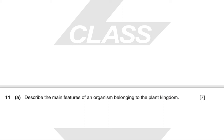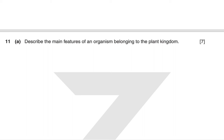Final question: describe the main features of an organism belonging to the plant kingdom. Features include: a cell wall made of cellulose, a large central vacuole, plasmodesmata, multicellular organisation, autotrophic nutrition, chloroplasts and chlorophyll enabling photosynthesis, eukaryotic cells, starch as the primary storage compound, and cells differentiated into tissues. Adaptations to mention include the cuticle, vascularity, guard cells and stomata.